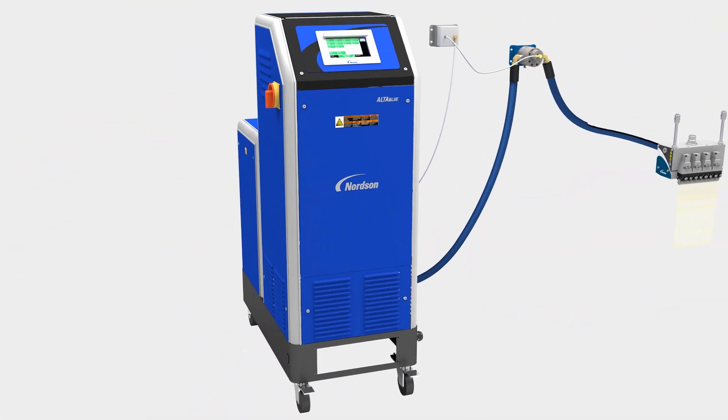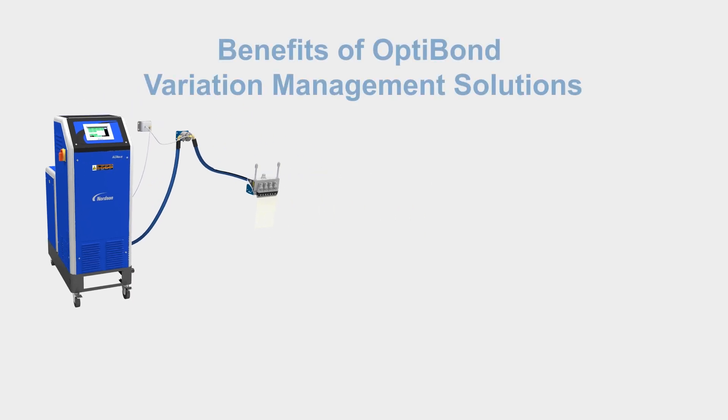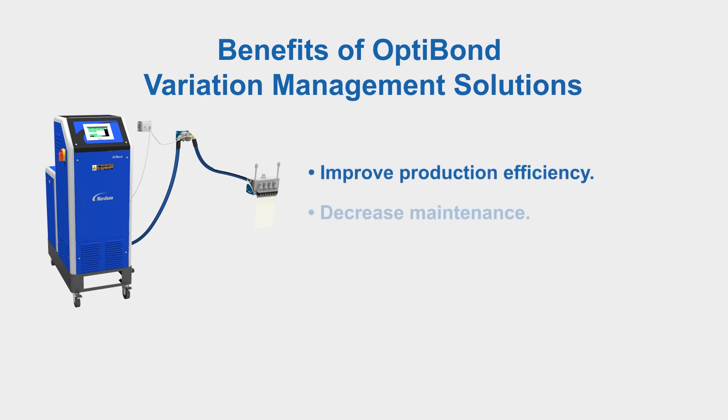Implementing a Nordson OptiBond variation management solution offers a number of benefits to manufacturers: improved efficiency, decreased maintenance, enhanced quality, optimized material use.